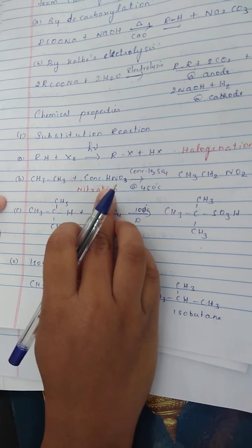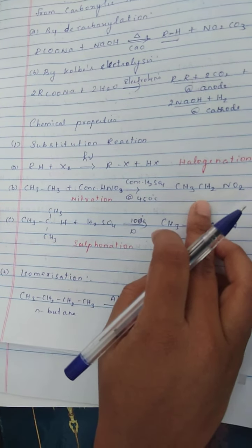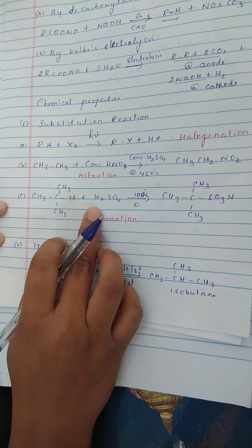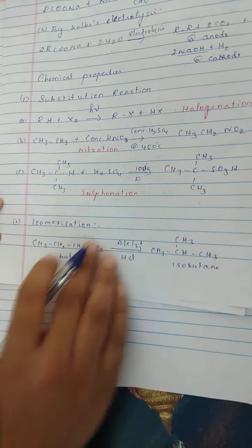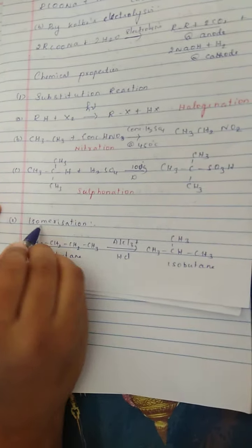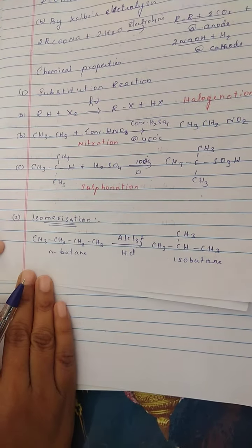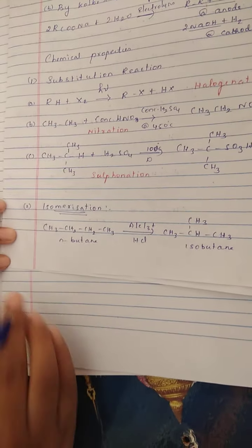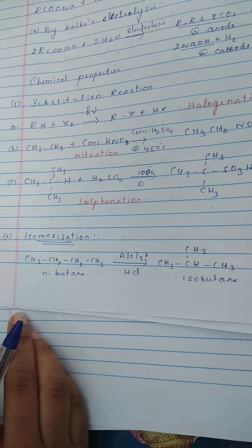Nitration — in presence of concentrated HNO3 and concentrated sulfuric acid, you get a nitroalkane. Again, sulfonation — if you are using sulfuric acid, you get a sulfonic acid. Here a tertiary carbon is used. So isomerization — you have to convert; chain isomerism is a major part, and position isomers are possible for alkanes.